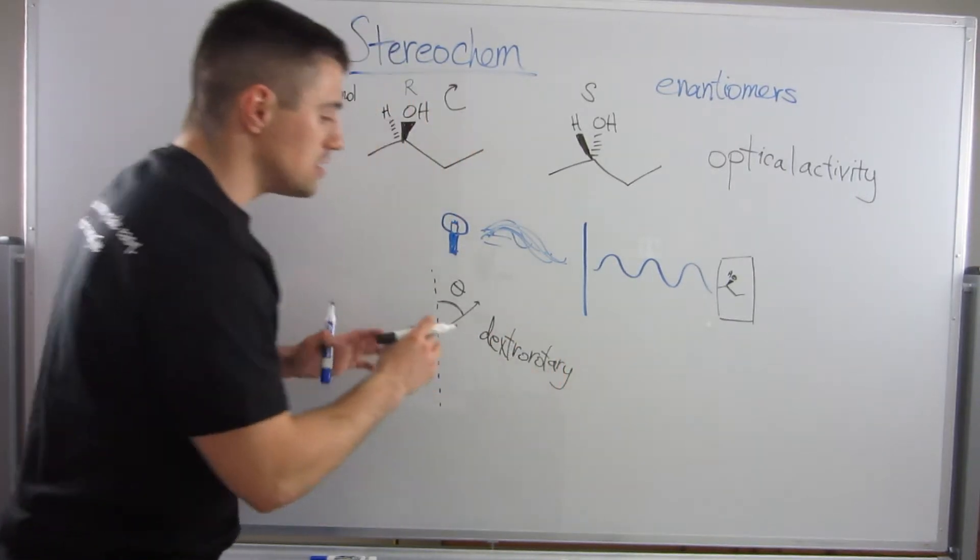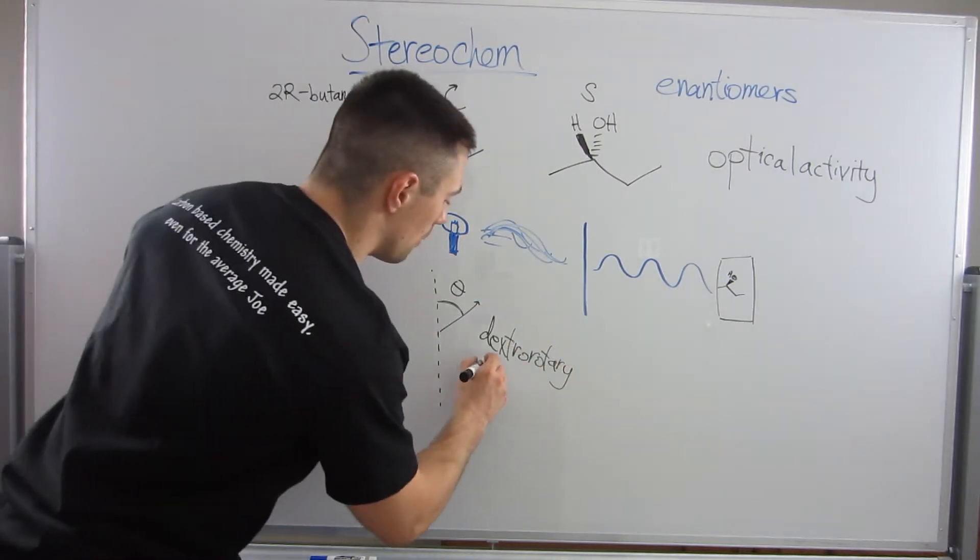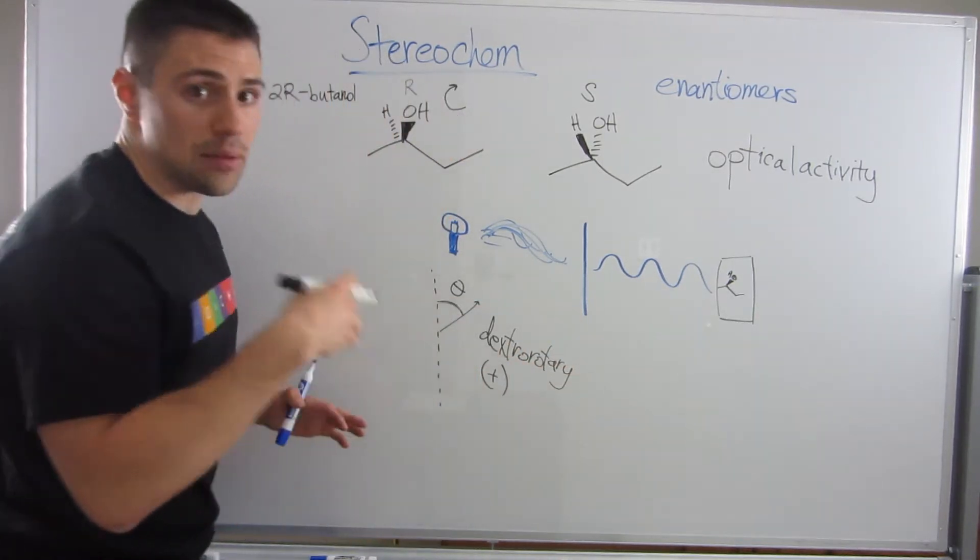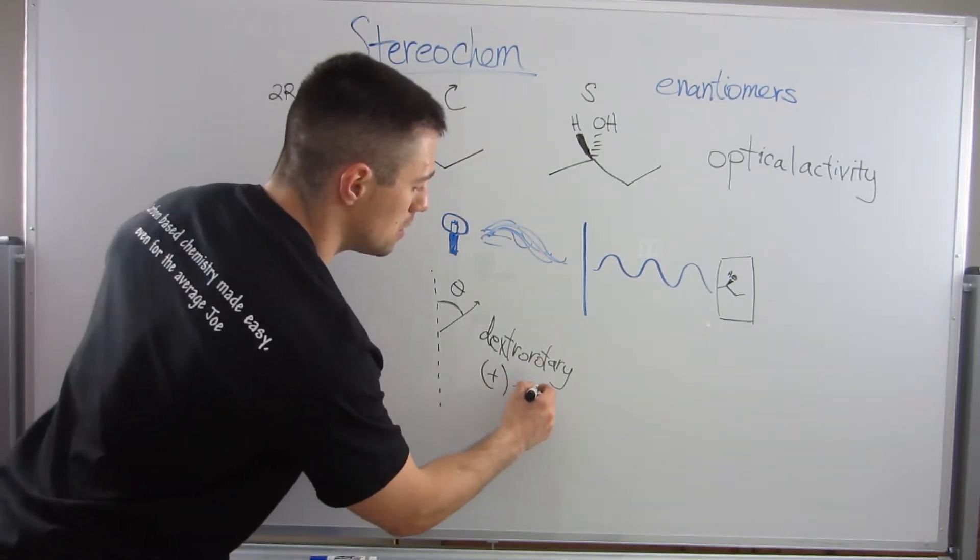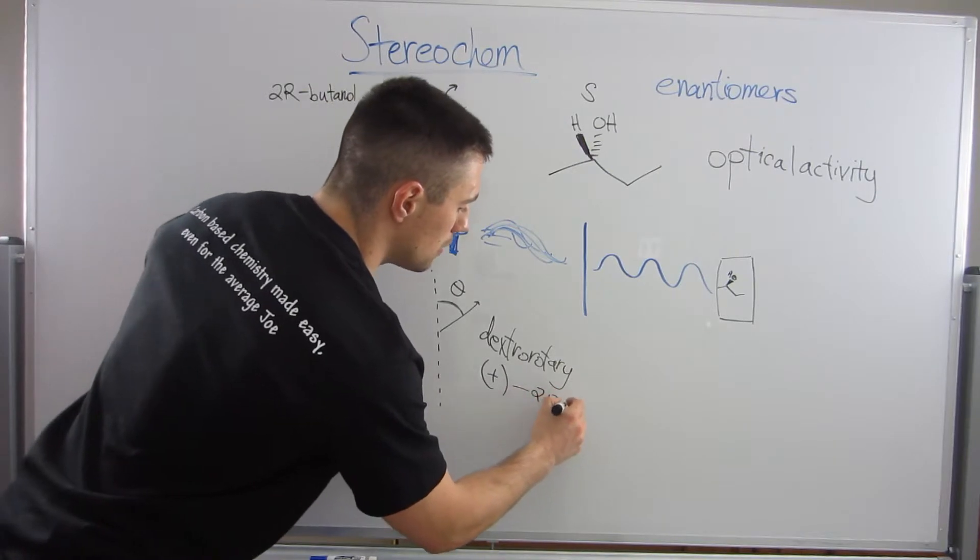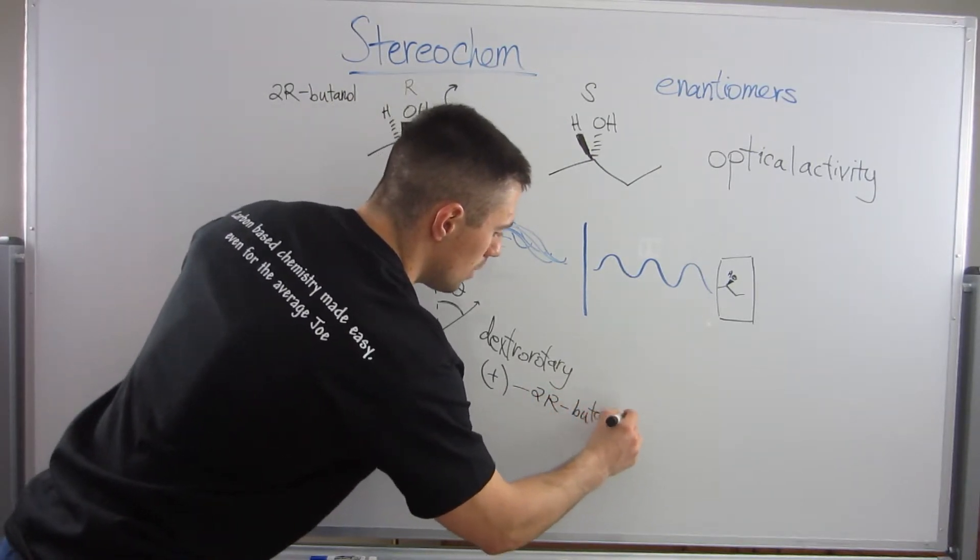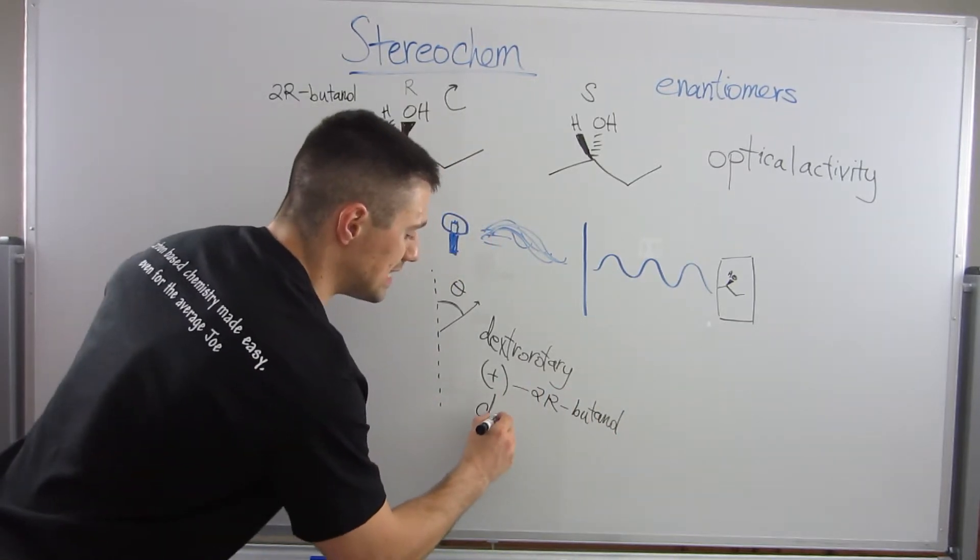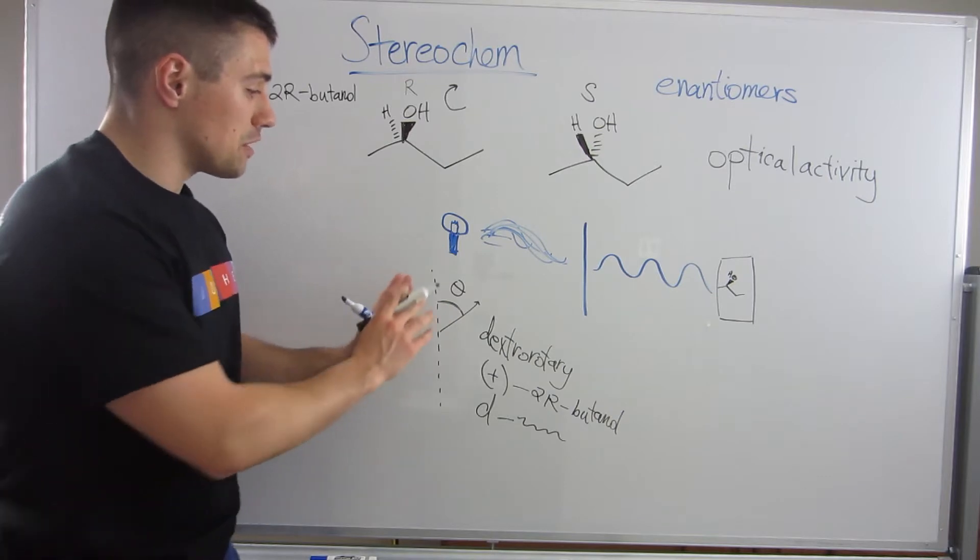And you can signify that also if you see a plus sign in parentheses, or if you just see like a plus sign in the name of the molecule, like plus 2R butanol, or you could see lowercase d and then the name. So that's what happens when the light's bent to the right.